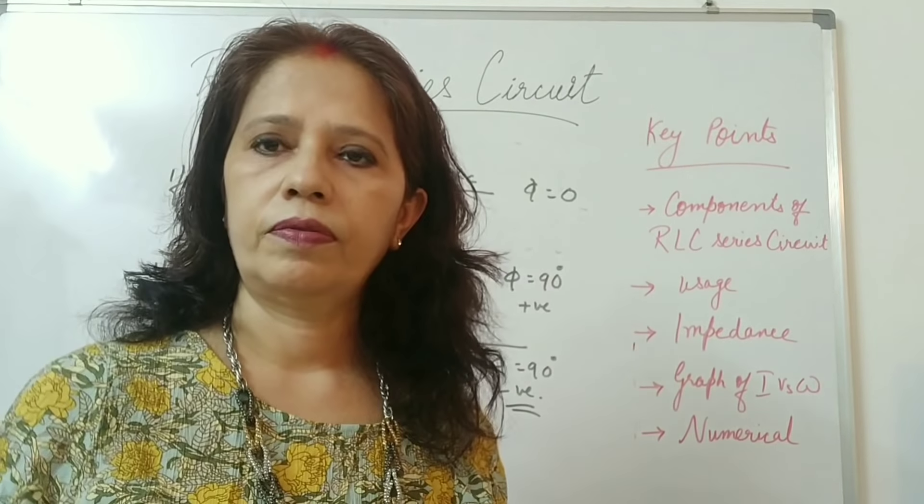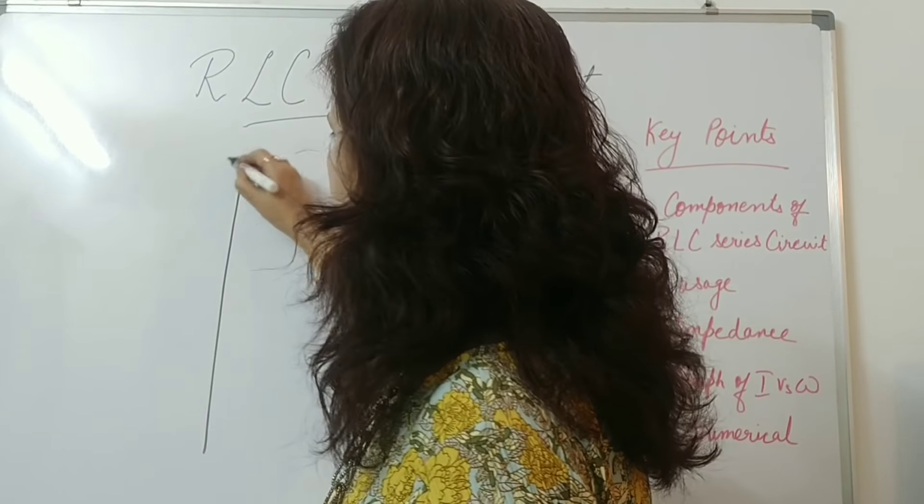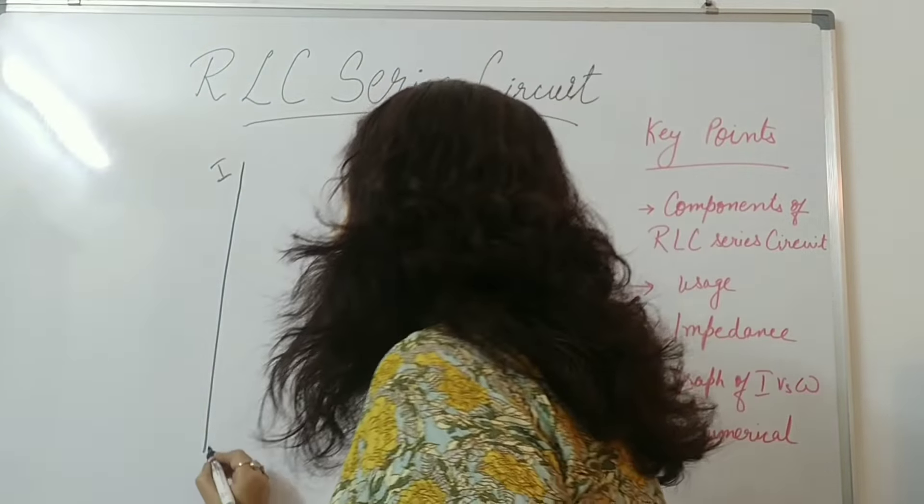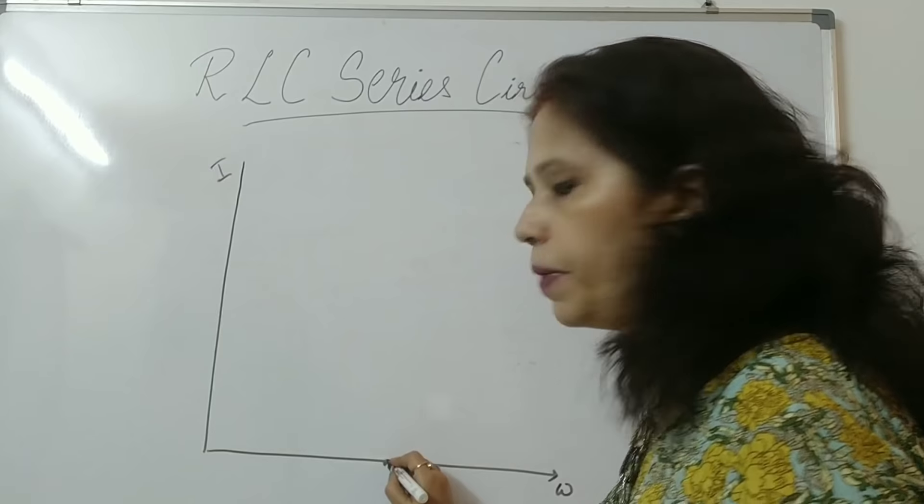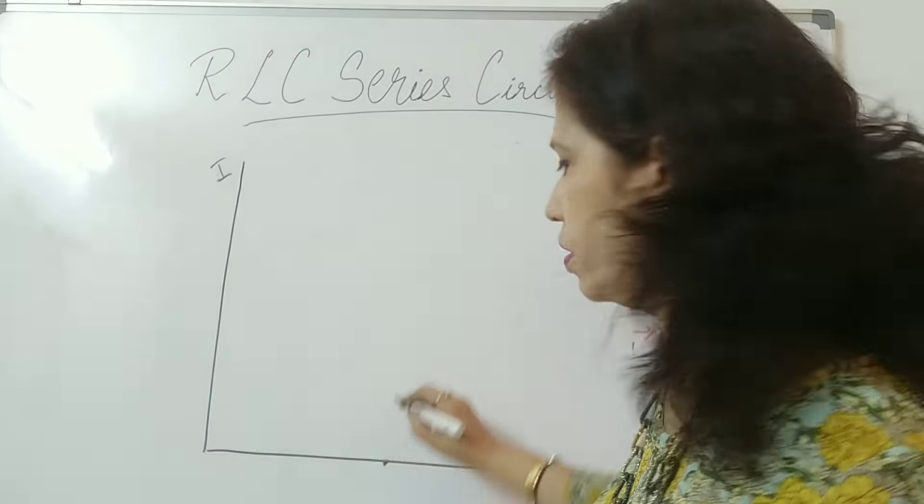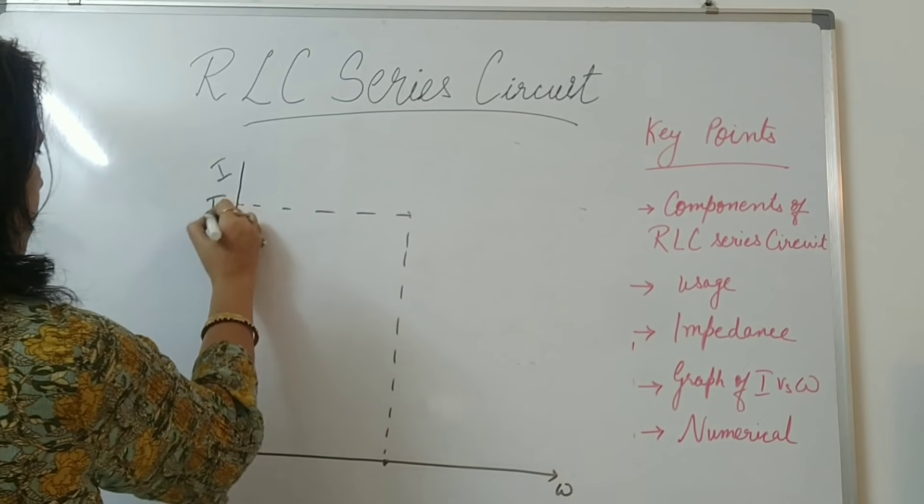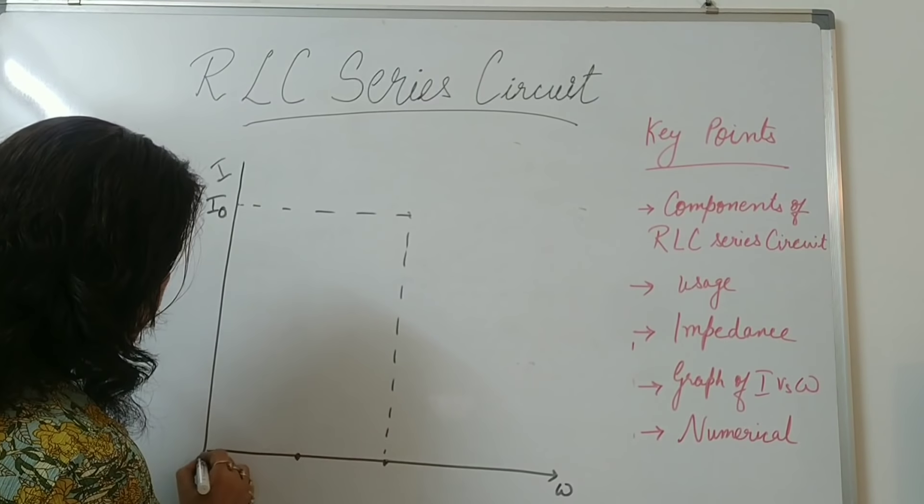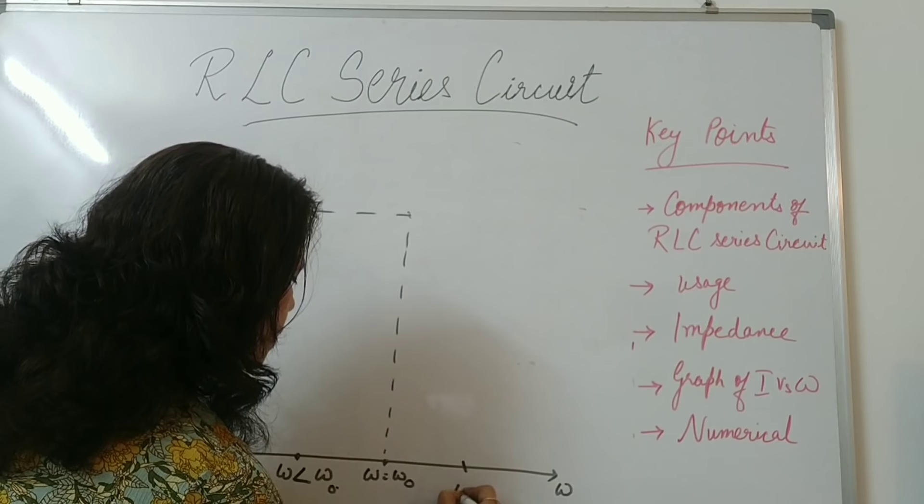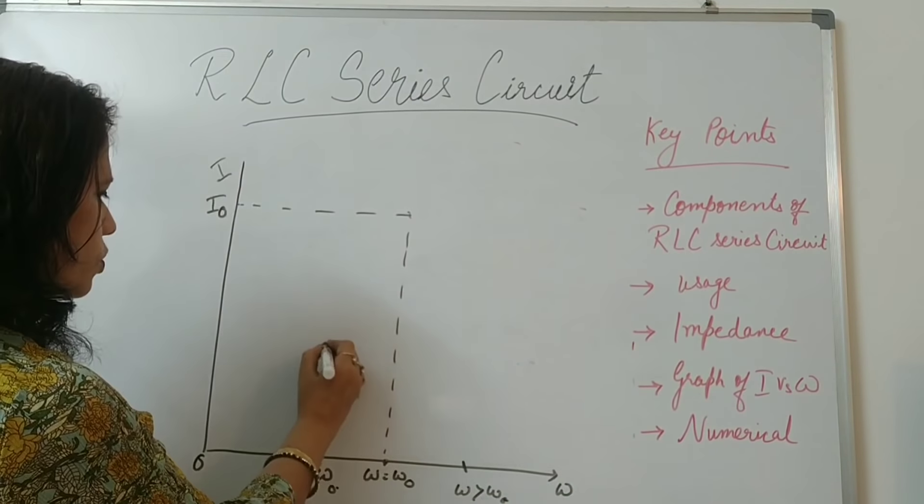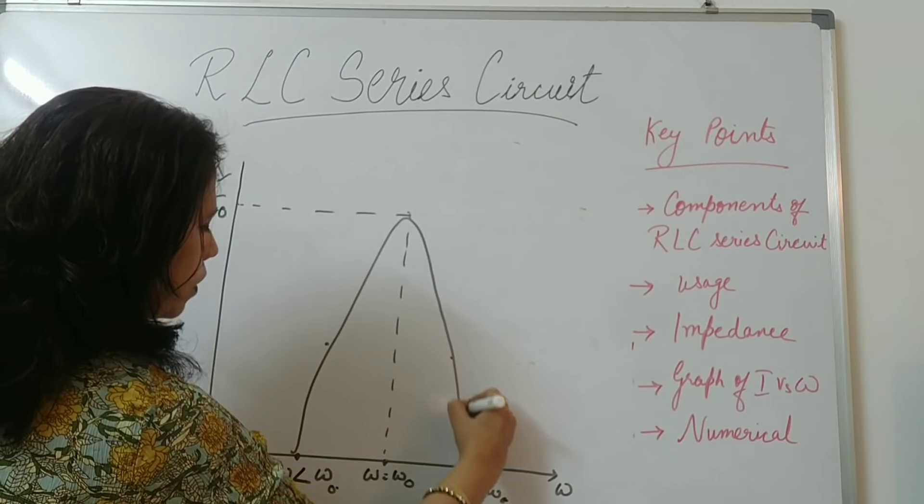Now to draw the graph. If we plot a graph of current versus angular frequency. On the Y axis we are taking current and on the X axis we are taking Omega. If your supply voltage as we discussed just now is equal to Omega naught. Then the current will be maximum. So this will be your I naught and if I am taking here Omega less than Omega naught and I am taking here Omega greater than Omega naught. In these two cases current will be somewhere here. Moderate current. So the graph will be of this form.